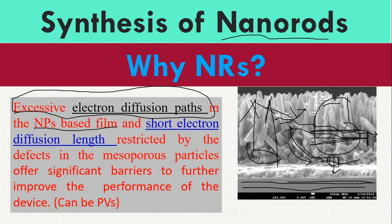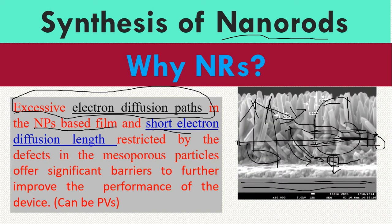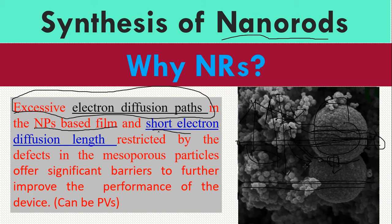Short electron diffusion length is very clear — we need a material that takes our generated electrons directly to the electrode collection site. With a nanorod, when you generate an electron at some place, it will directly reach the electrode through this straight path.